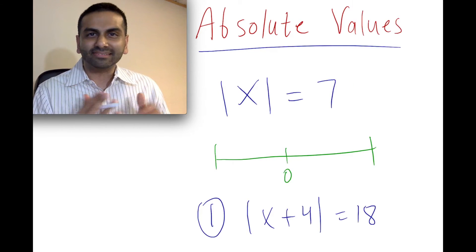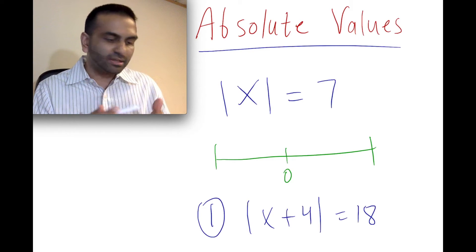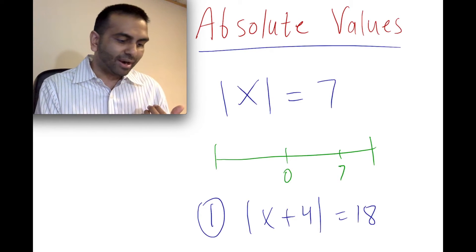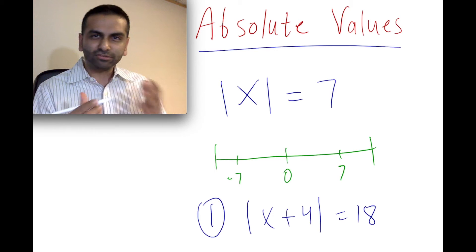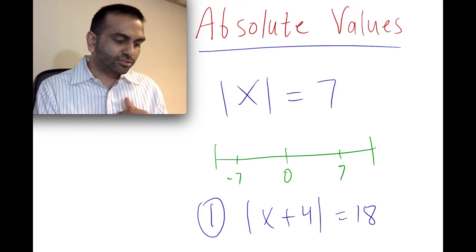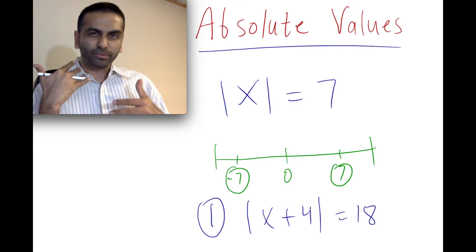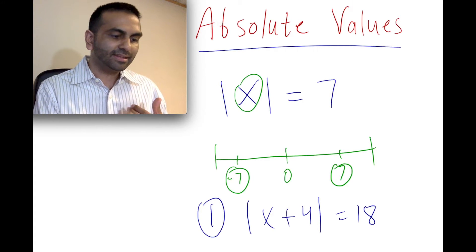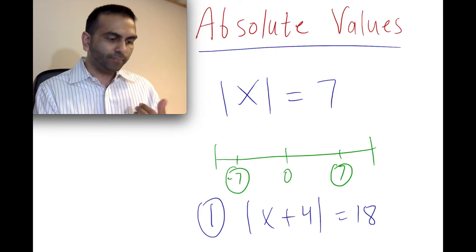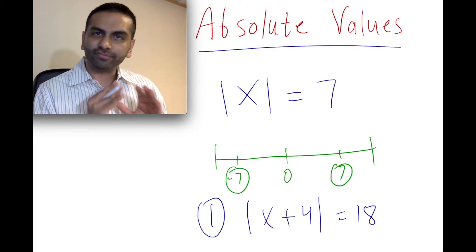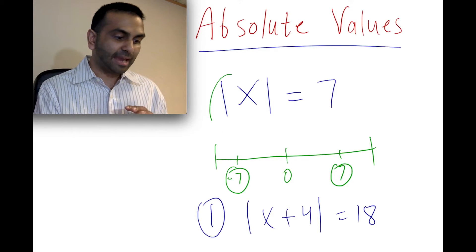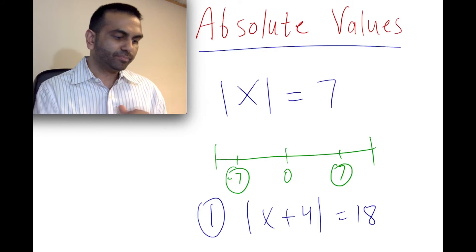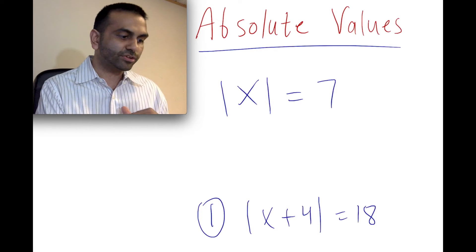Now, if you were to ask any reasonable person what that means, they would probably say that x is either seven, or the other option is that it could be negative seven. So those are the two possible options. The way to solve absolute value problems is to first get the absolute value by itself on one side, and then you split it up. You set that equal to both the positive and the negative version of that number.